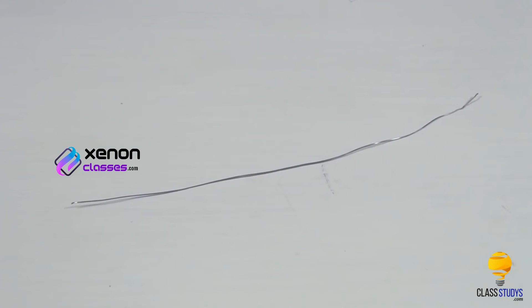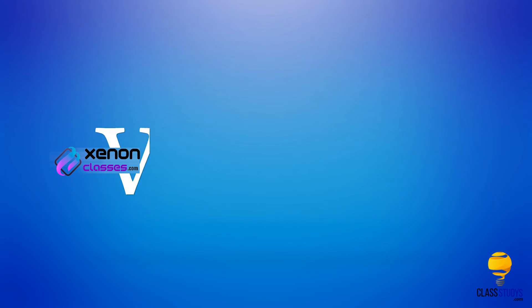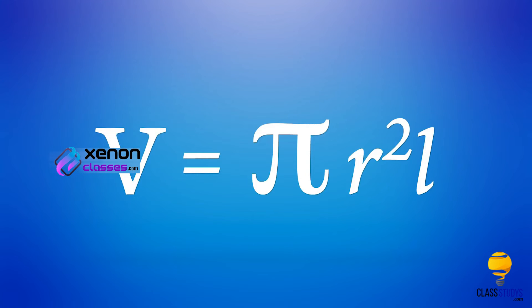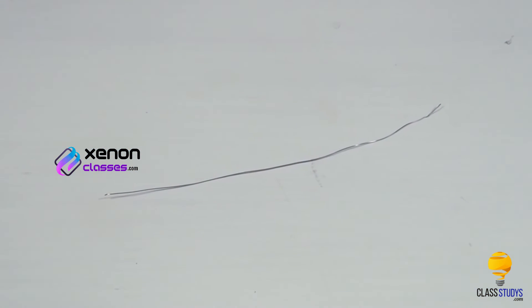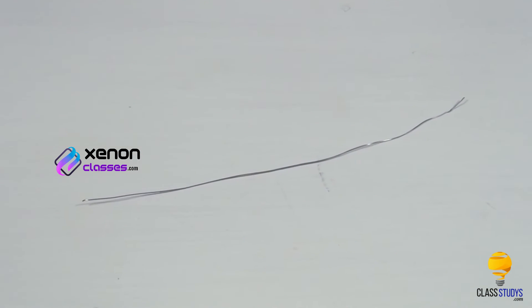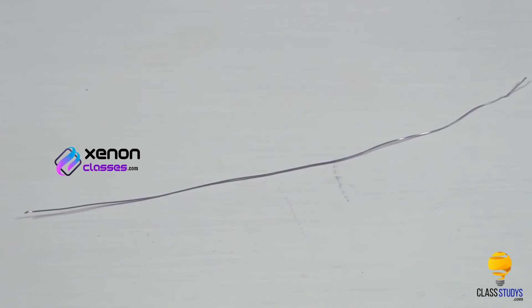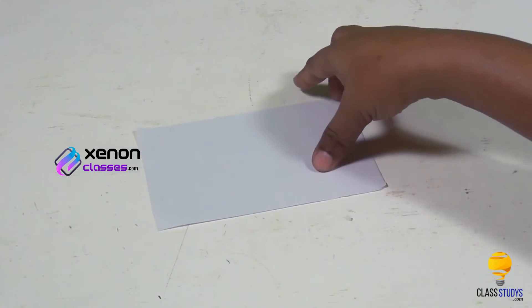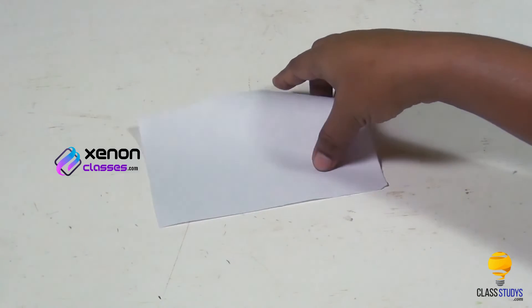Calculate the volume of the wire using the equation V equals pi R squared L, where the length L of the wire is measured using a metre scale.